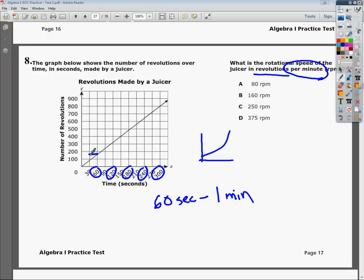The simplest way is just to go to 60 seconds, see where it connects right there, somewhere over in this area, or a little bit more than 150. So my answer is 160 rotations per minute.